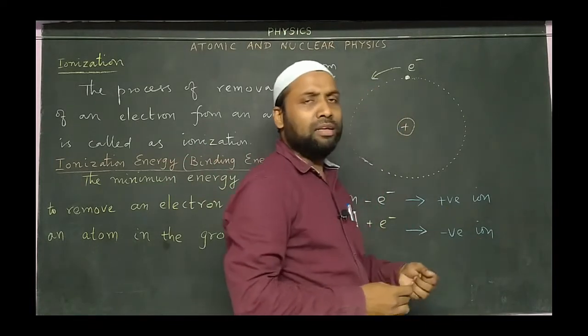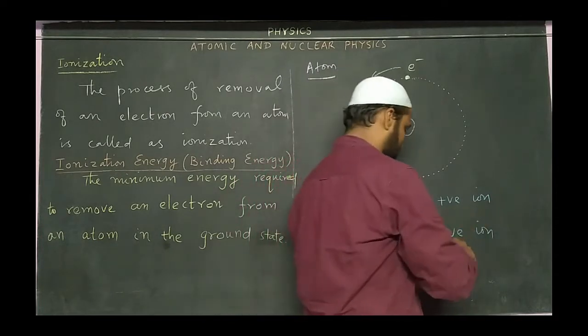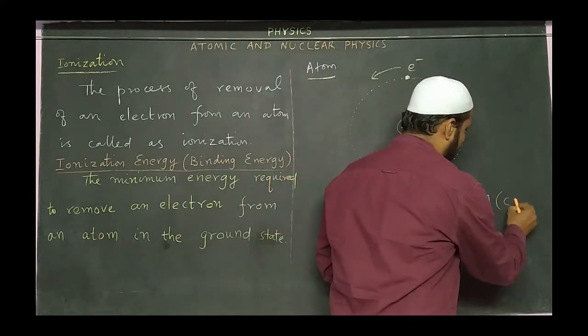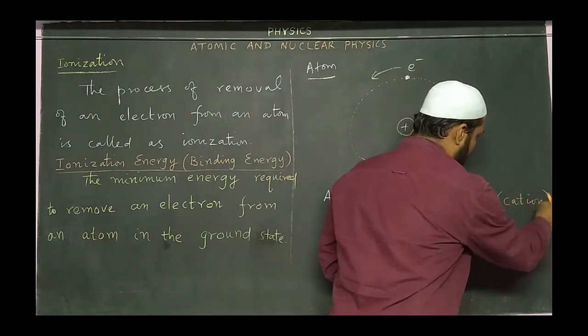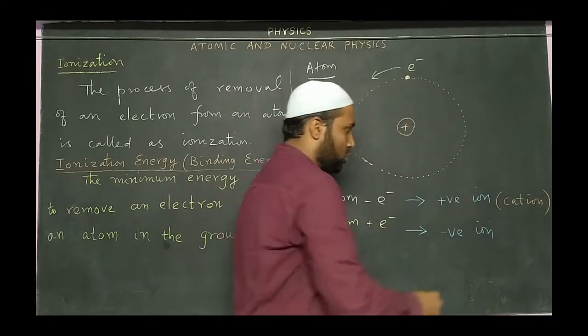Here, a positive ion is referred as cation, and a negative ion is known as anion.